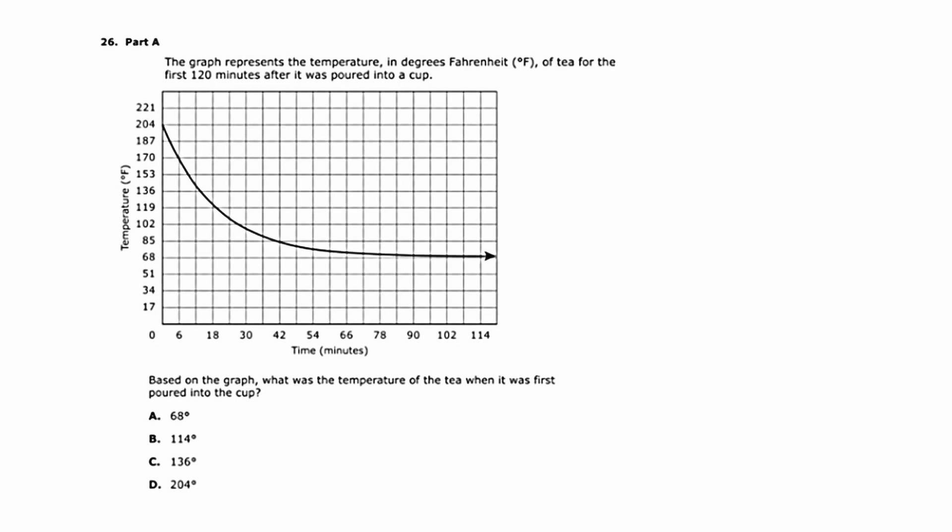In this question we're given a graph, and this graph has a title. It says the graph represents the temperature in degrees Fahrenheit of T for the first 120 minutes after it was poured into a cup. You'll notice along the x-axis, or the horizontal axis, is the time given in minutes.